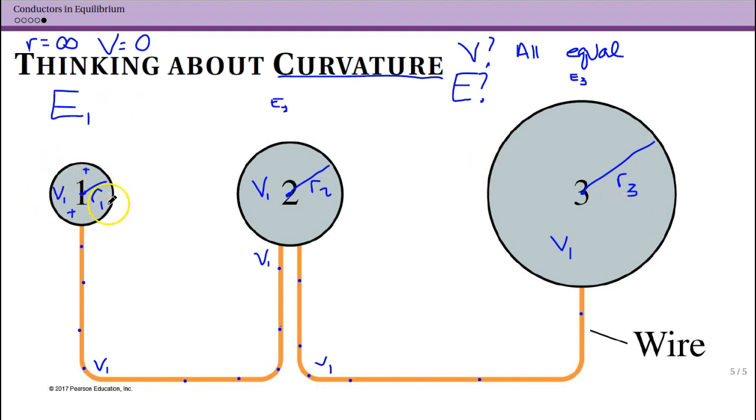So again, this is the sharpest. This has the middle curvature and so on. So the electric field right outside of V1 is bigger than the second one is bigger than the third one.